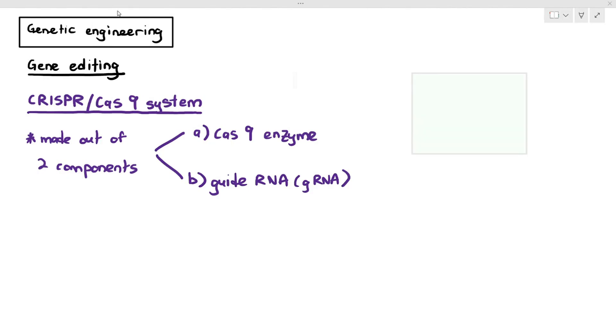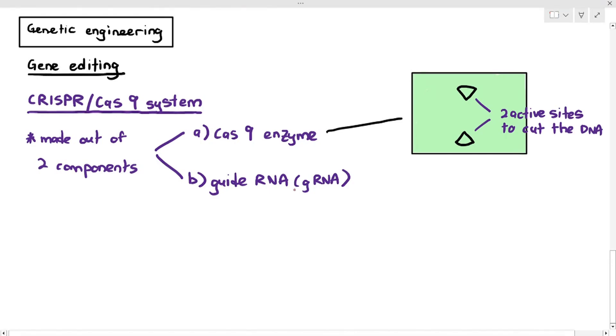The Cas9 enzyme, I'm going to represent the shape of the enzyme as a rectangle and those two triangles are the active sites. Yes, this enzyme has two active sites. And the function of the active site of the Cas9 enzyme is to cut the DNA. And it will cut the DNA by severing the phosphodiester bonds, the covalent bonds, by the way, at the sugar phosphate backbone.